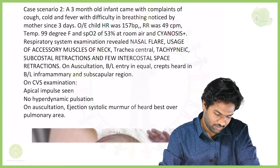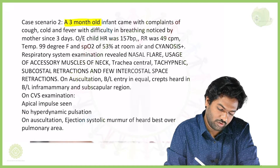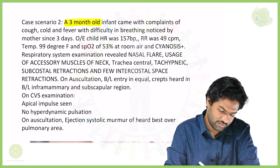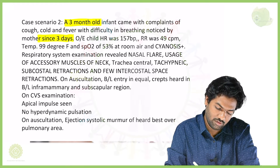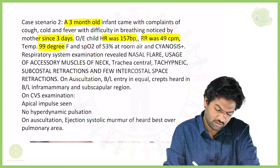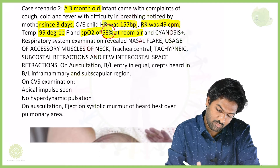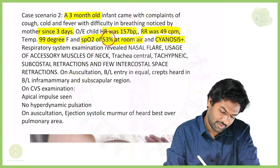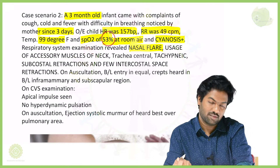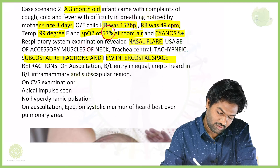Now here is case scenario two: a three-month-old infant came with complaints of cough, cold, and fever with difficulty in breathing, noticed by the mother since three days. On examination, heart rate was around 157 beats per minute, respiratory rate around 49 cycles per minute, temperature raised, and saturation significantly low at 53% at room air. Importantly, cyanosis is present. Respiratory system examination revealed nasal flaring, usage of accessory muscles, trachea central, tachypneic, subcostal and few intercostal retractions. On auscultation, bilateral air entry is equal.